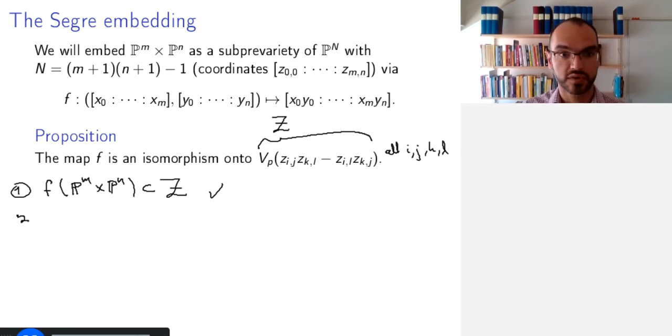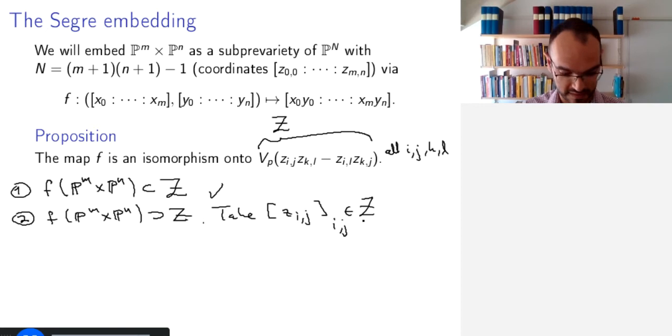The more crucial part is the other implication. And so how do we prove this? Well, take a point, denoted Z_IJ, for all possibilities I, J, in this set Z.